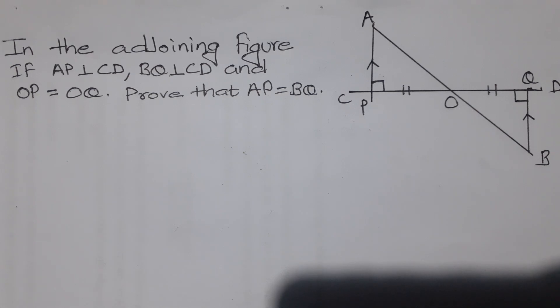In the adjoining figure, if AP is perpendicular to CD, BQ is perpendicular to CD, and OP is equal to OQ, prove that AP is equal to BQ.